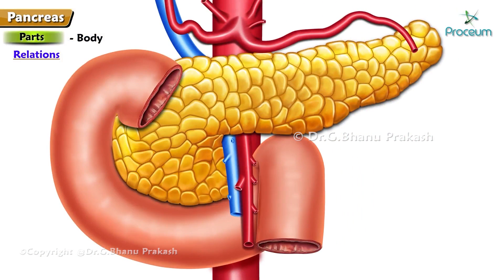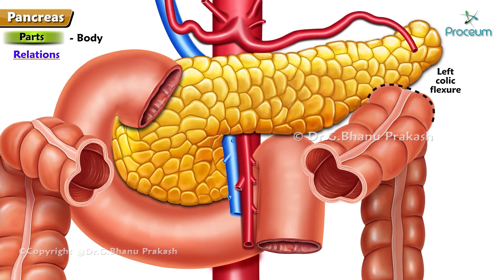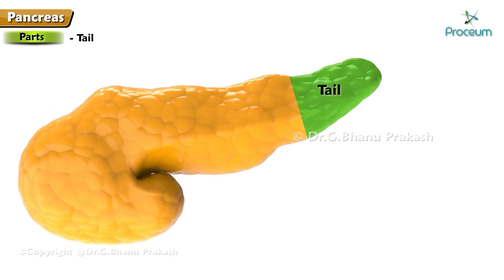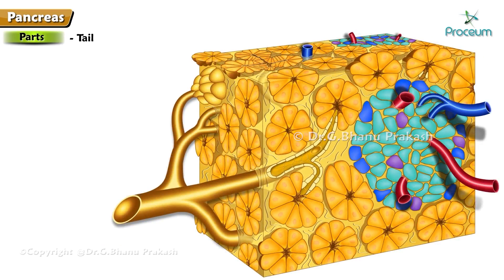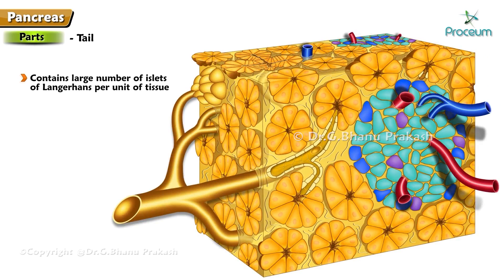The inferior surface, covered by peritoneum, is related to the duodenojejunal flexure, coils of jejunum, and left colic flexure. Tail of the pancreas: it is the narrow left end of the pancreas that lies in the lienorenal ligament along with the splenic vessels. The distal segment of the tail is intraperitoneal. It contains a large number of islets of Langerhans per unit of tissue compared to other parts of the gland.